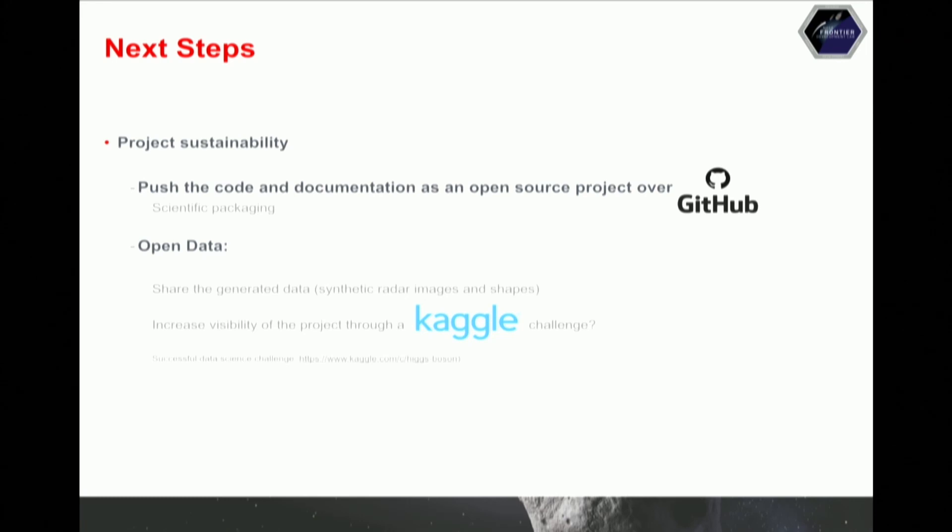On the deep generative networks, we would like to try different other models that were developed in, let's say, in the last 12 months. For instance, the generative adversarial networks, and the pixel RNN over here. And we would like, because we are really thinking about this idea of replacing the shape software, we would like to add more parameters for the input, like the orbits, the bandwidth, and all these parameters that you have in the original software. In terms of sustainability of the project, we were thinking about pushing, of course, the code and documentation, and have it as an open source project over GitHub. And for the data that we generated, and we thought that this data contains value, we are thinking about sharing it to the data scientist people. And we're thinking about increasing the visibility of this overall project by probably going through a Kaggle challenge, and see if we confront the data scientists everywhere around the world with our data, what type of idea they can get. And this is something that was successfully done by physics people when they were searching for the Higgs boson. Thank you very much.